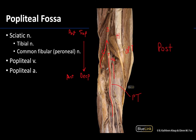To review: the sciatic nerve and its terminal branches — the tibial nerve and the common fibular or peroneal nerve — are superficially placed in the popliteal fossa, with the popliteal vein intermediate but very close to the deep popliteal artery. Those are the contents of the popliteal fossa in a nutshell. Thank you for your time and attention, and I hope you have a great rest of your day.